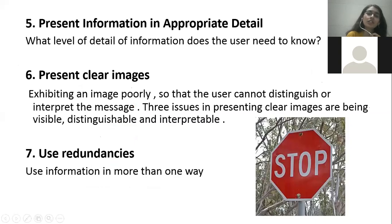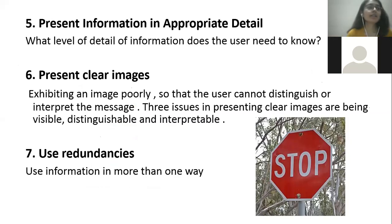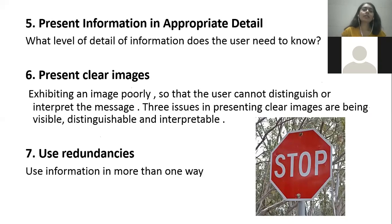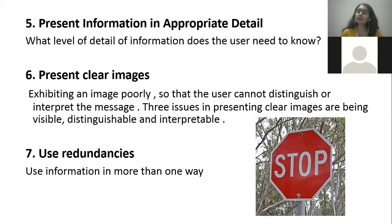The fifth cognitive principle is to present information in appropriate detail — do not over-inform or under-inform. This is important in training contexts: if you want a person to use controls properly, give them appropriate information. Do not leave them under-educated, but also do not give them unnecessary extra detail.